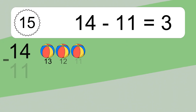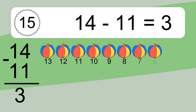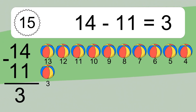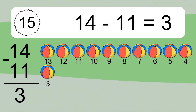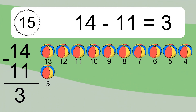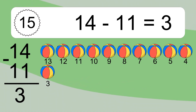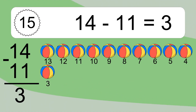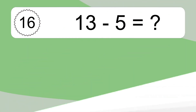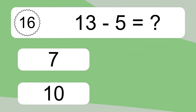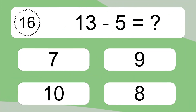14 minus 11 equals 3. Let's count it: 13, 12, 11, 10, 9, 8, 7, 6, 5, 4, 3. 13 minus 5 equals what?